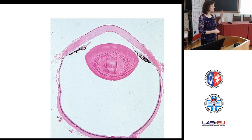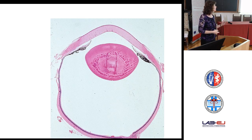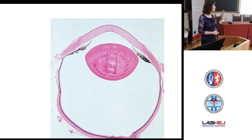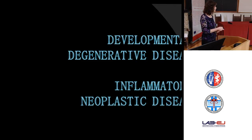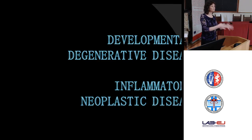Coming back to this histologic section, the eye is quite challenging to trim. This section here is one where artifacts are minimal, though we still have a little bit of tearing in some locations. We need to be careful as pathologists that we don't interpret artifacts as real changes. I will point out some of these things as I go through the lecture. I have divided the lecture into developmental and degenerative diseases in the initial part, and inflammatory and neoplastic diseases in the second part, focusing on domestic animals.